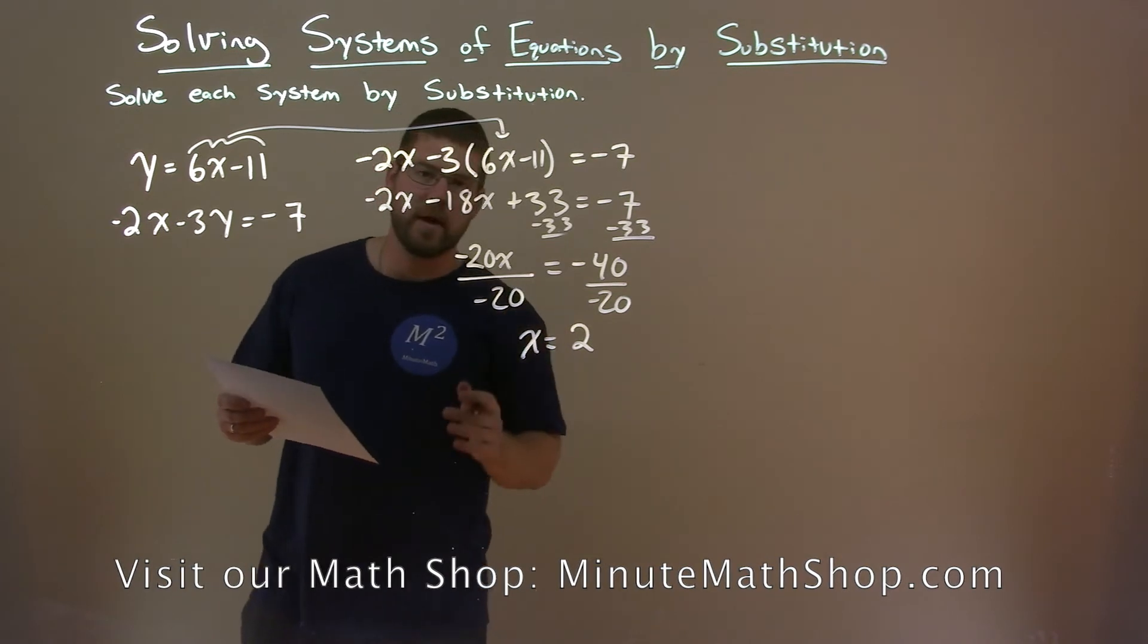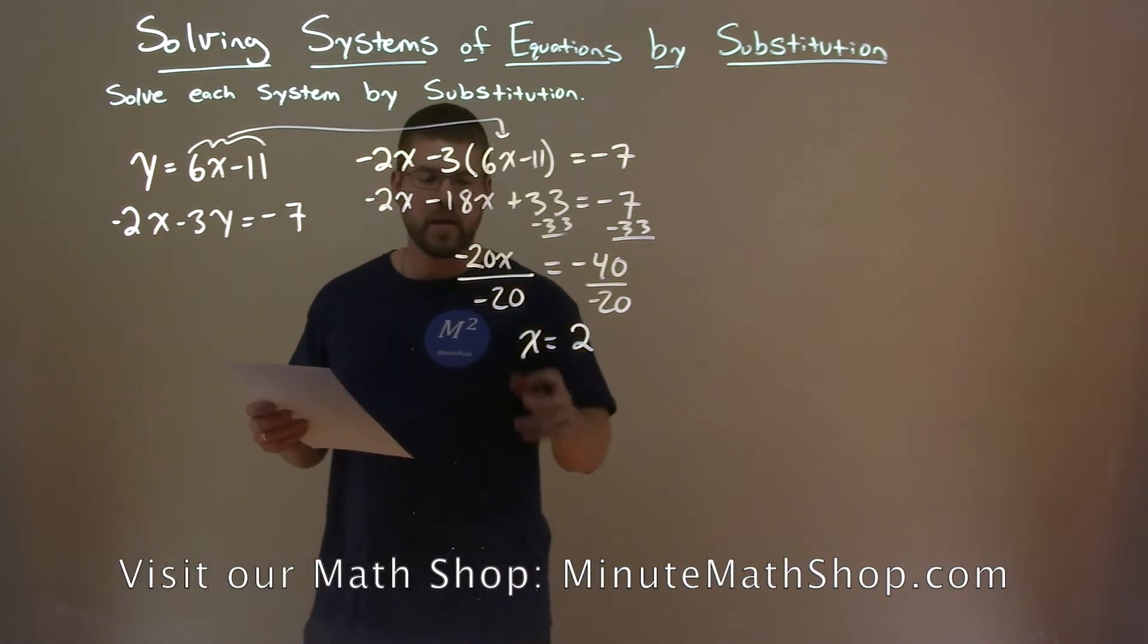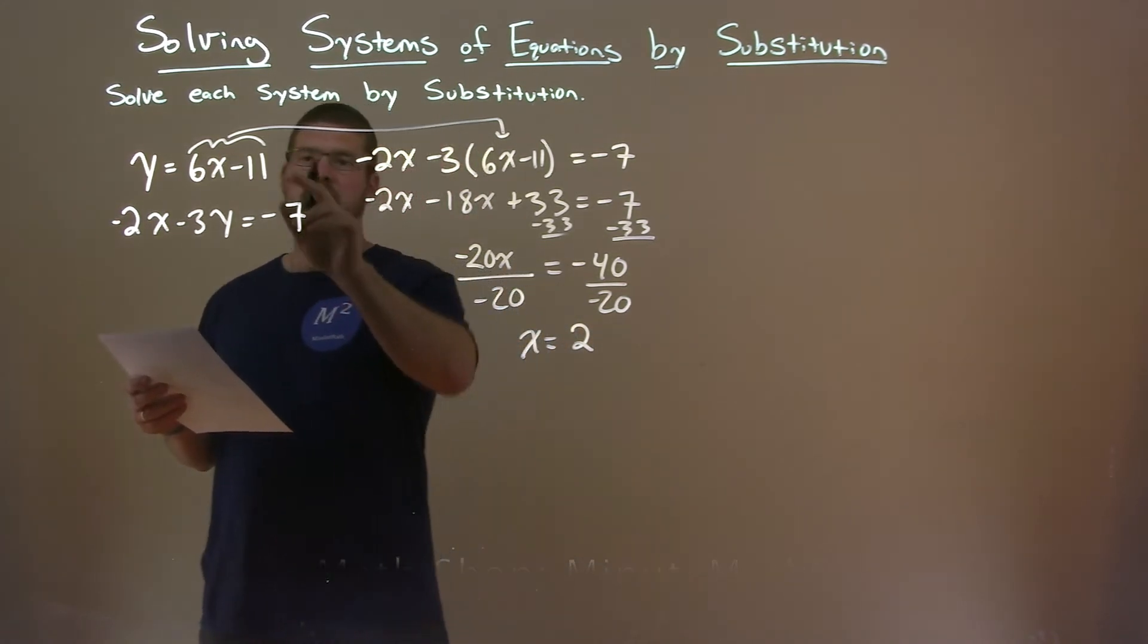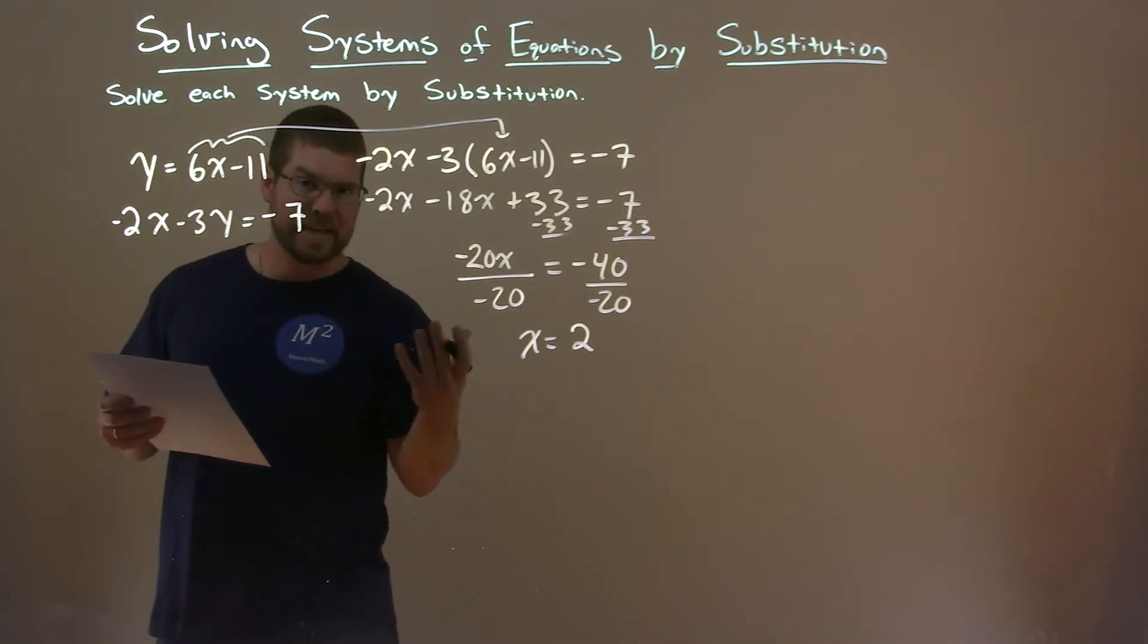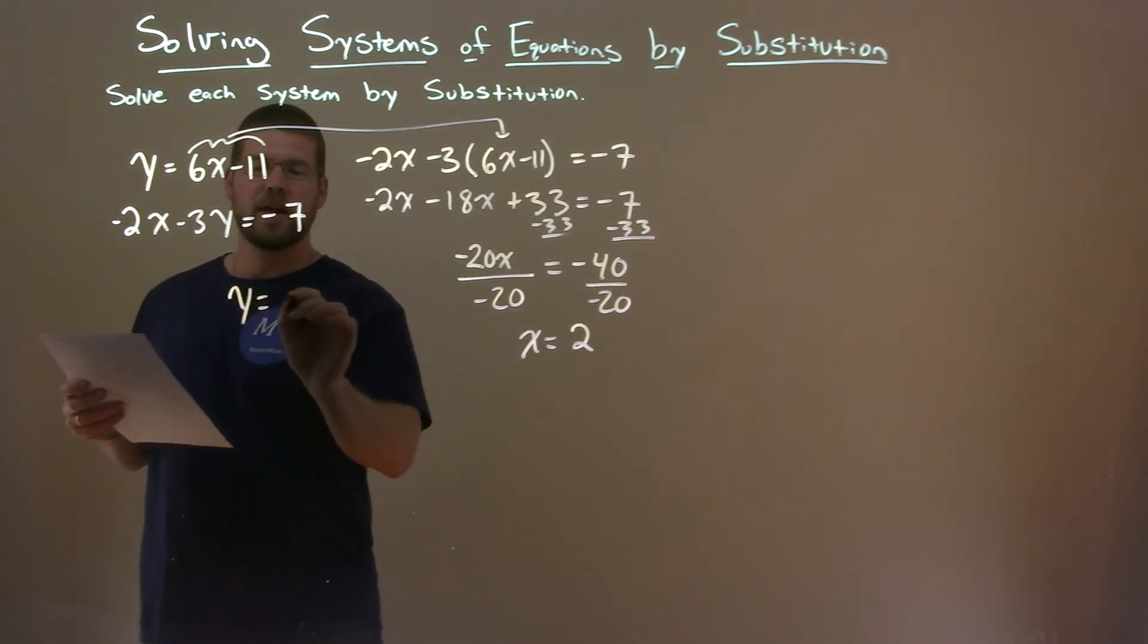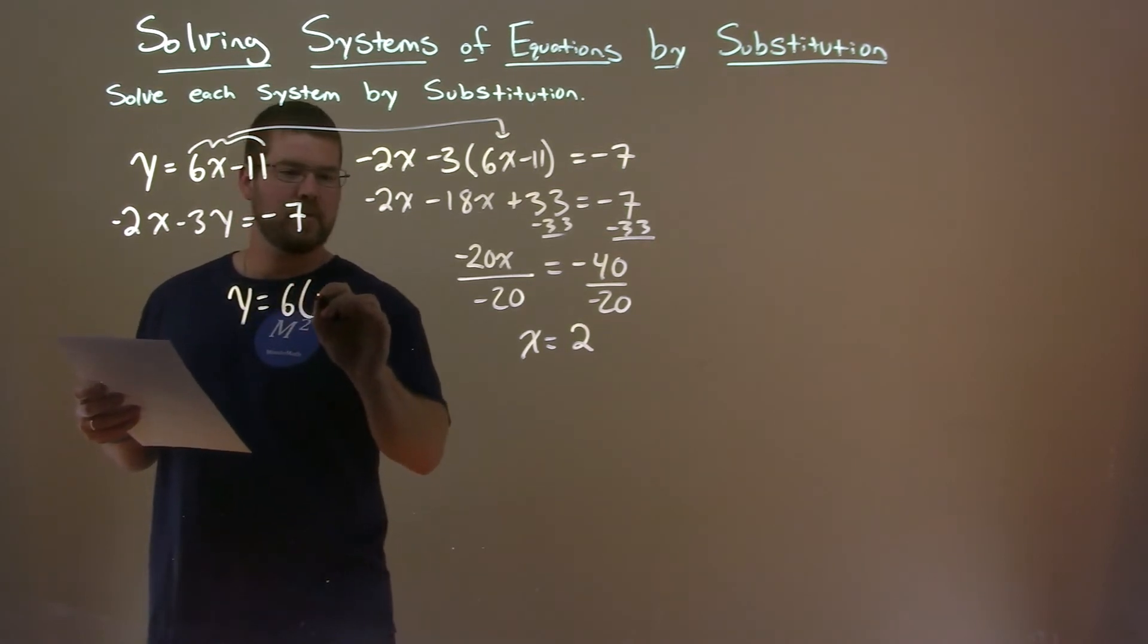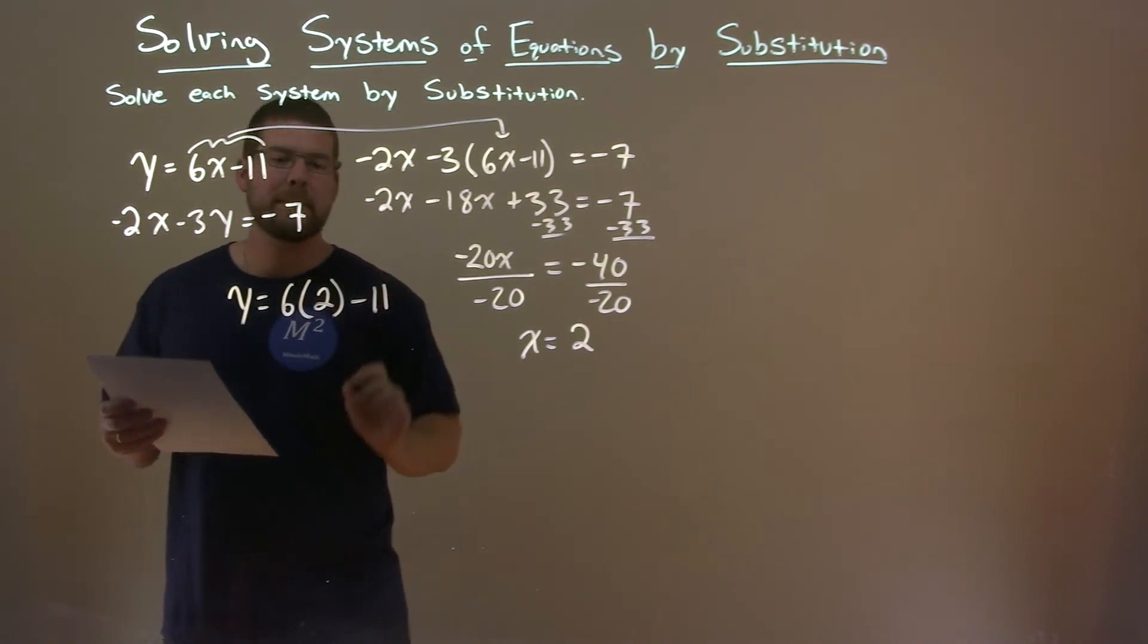Now we have one of our values. We have to find the y value. We take this 2 and plug it into either one of the equations. Pick an easier one. I think the first equation is easy. 6 times 2, putting 2 in for x, minus 11.